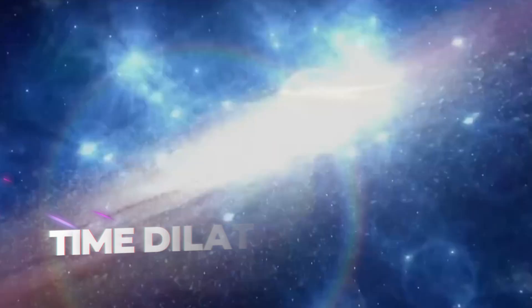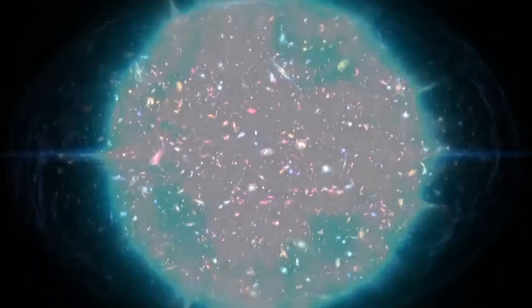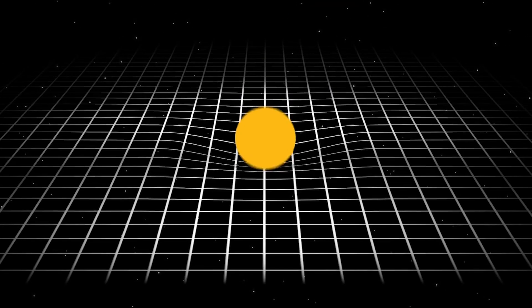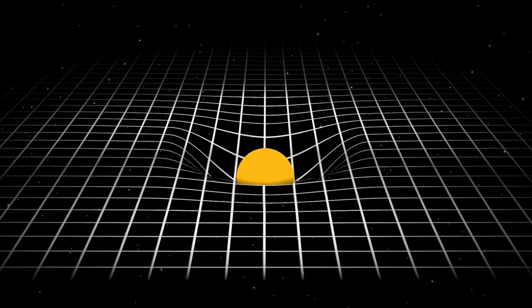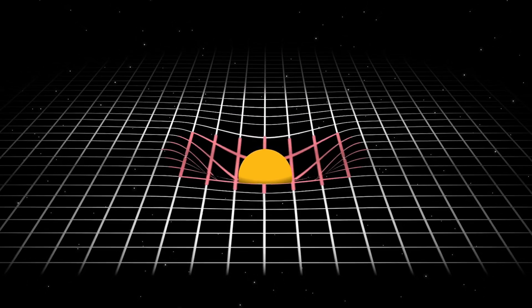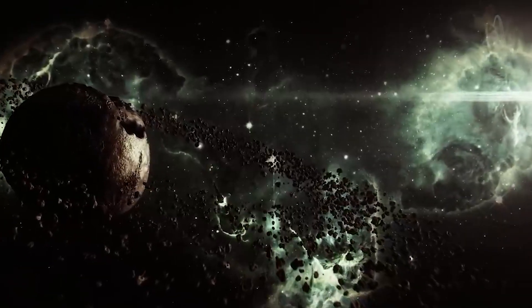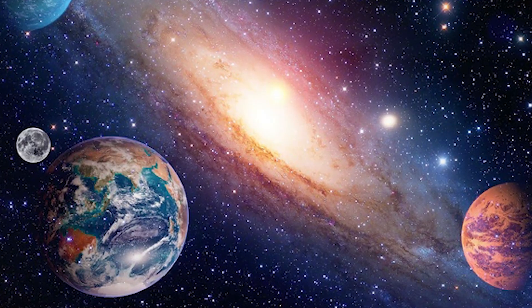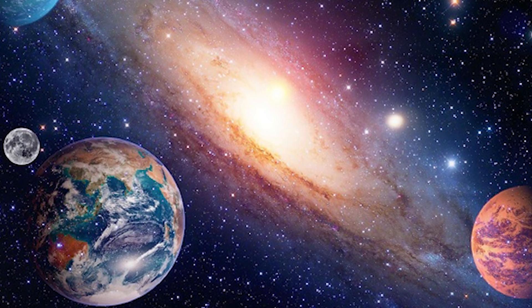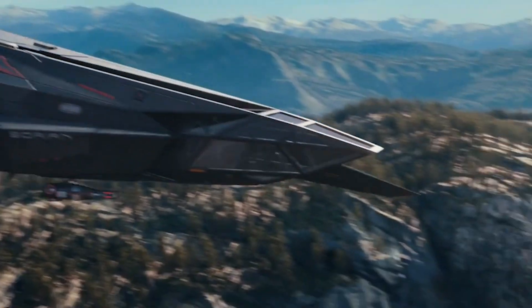This phenomenon is called time dilation, and it's a mind-bending concept that defies our everyday intuition. But that's not all - Einstein's general theory of relativity suggests that gravity itself can distort time. Near a massive object like a planet or a star, time actually flows slower than it does in the emptiness of space.